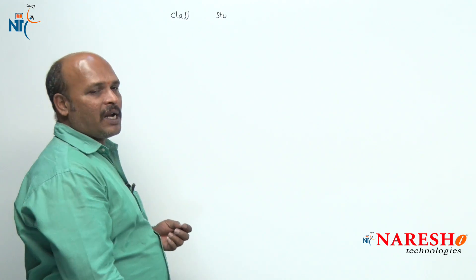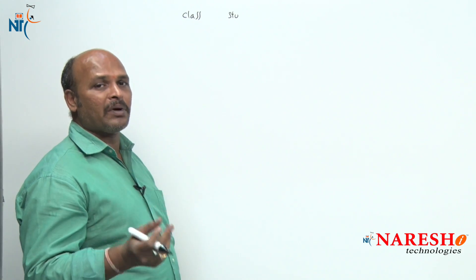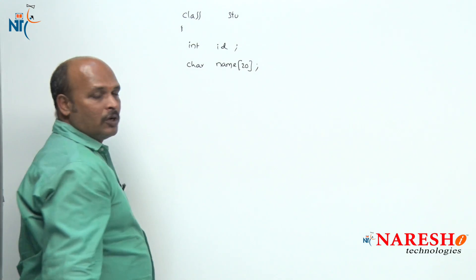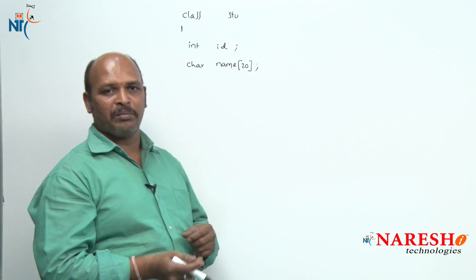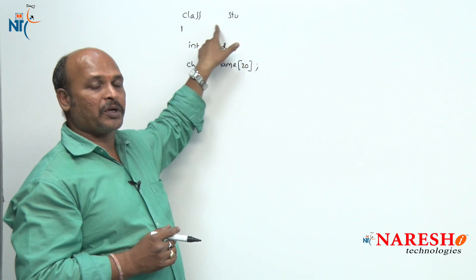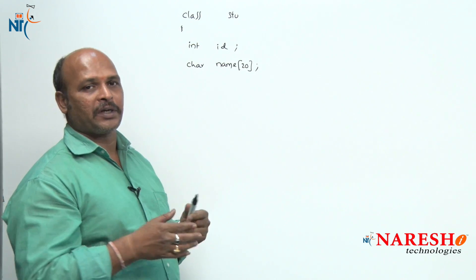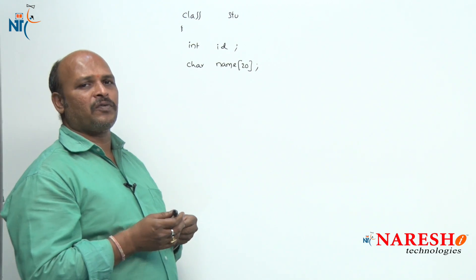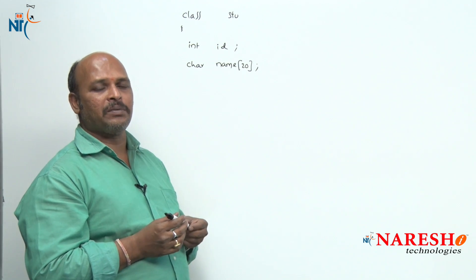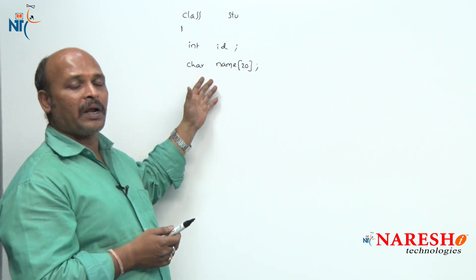For every class we start with the class keyword followed by the class name. Suppose my class name is 'stu'. Now I need some data members and member functions — id and name are data members. Observe that there are no private, public, or protected keywords here, because in C++ the default access specifier is always private. So id and name are private members.